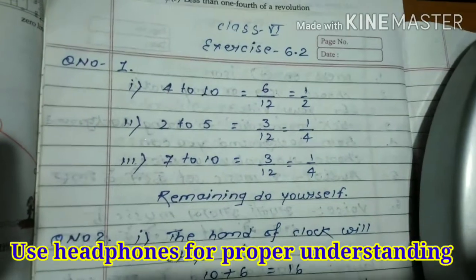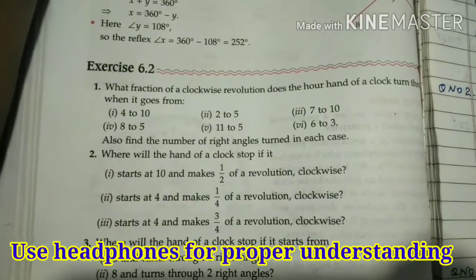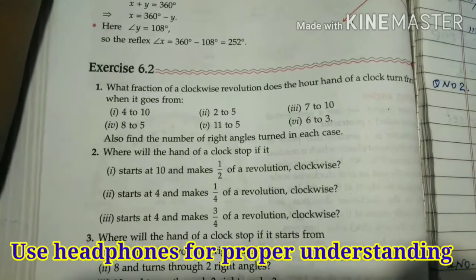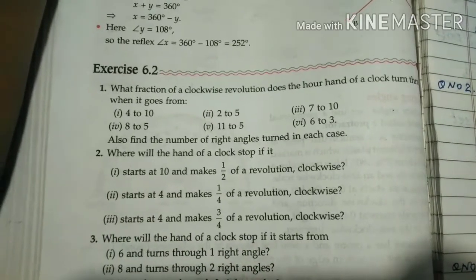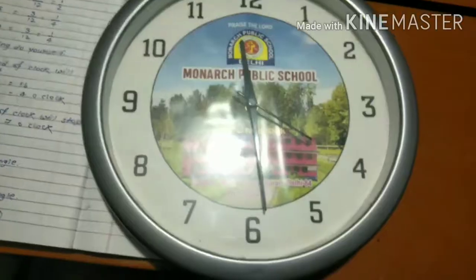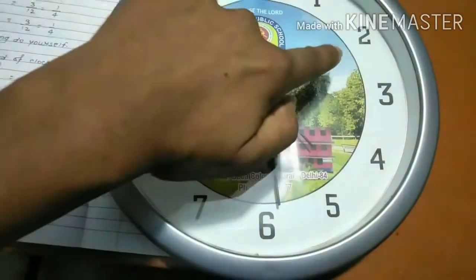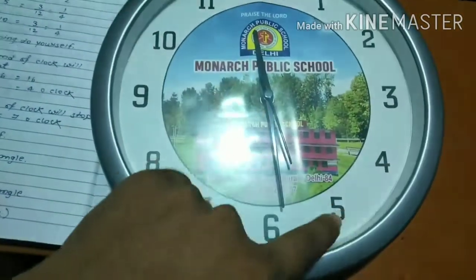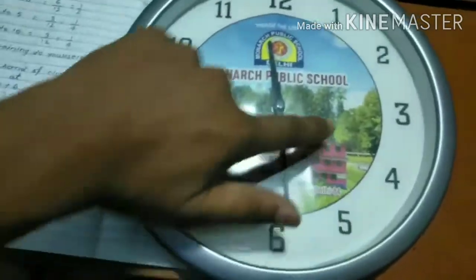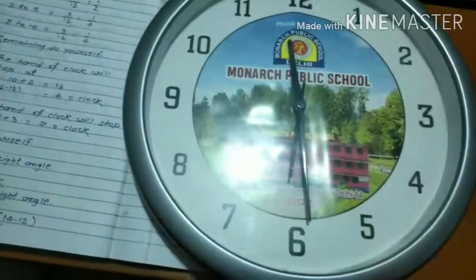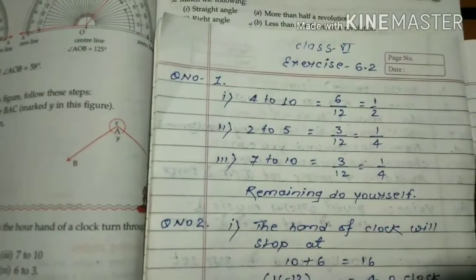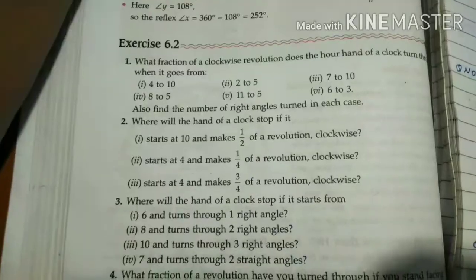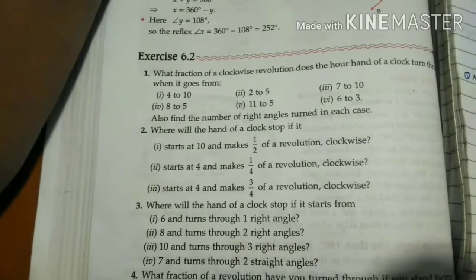So the answer will be 6 upon 12. If we simplify, 6 upon 12 equals 1 upon 2. Second part: 2 to 5. If the hour hand goes from 2 to 5, the fraction is 1, 2, 3 - total 3 positions.